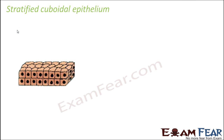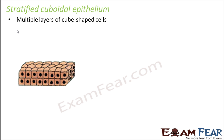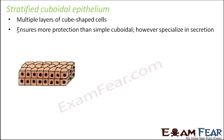Next is stratified cuboidal epithelium. This also consists of multiple layers of cube-shaped cells. They ensure more protection than simple cuboidal. However, they also specialize in secretion. One of the places where we find this kind of epithelium is the sweat glands.